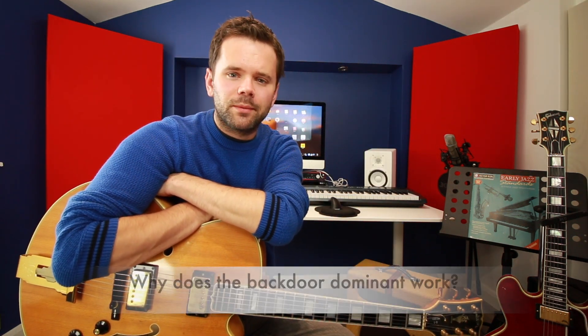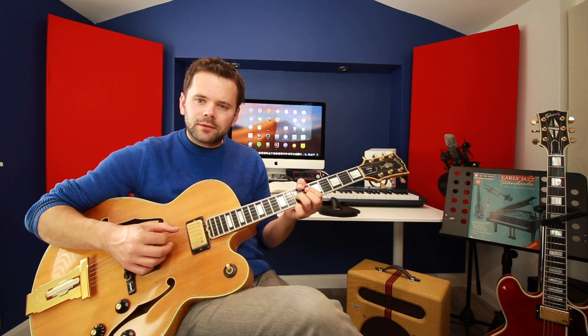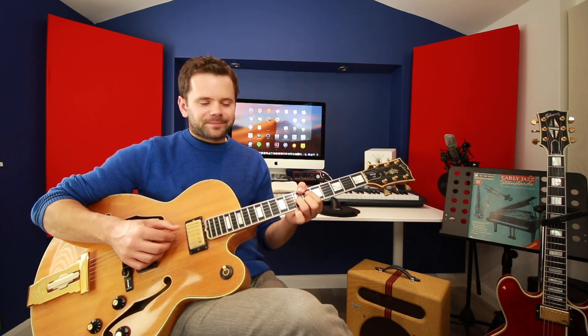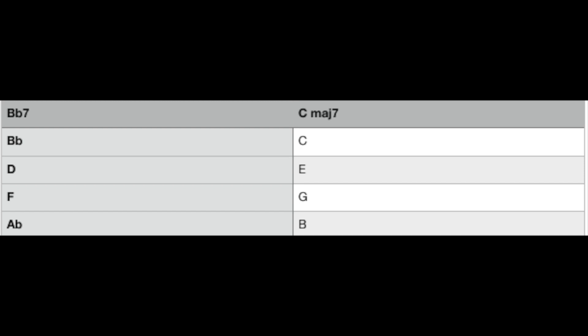Why does it work? It's to do with how the notes move into the one chord. Going Cmaj7, Bb7 to C: the 3rd of Bb7, the note D, can go up a tone to E — the major 3rd of C. The 5th, F, can go up a tone to G or down a semitone to E. And the Ab, the 7th of Bb7, can go down a semitone to G. They're all very close harmonically.